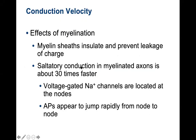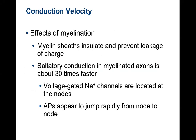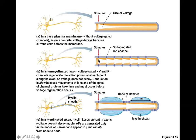Factors affecting transmission of the action potential include the diameter of the axon and the effect of myelination. Myelinated sheaths insulate and prevent leakage of charge. Saltatory conduction in myelinated axons is about 30 times faster — voltage-gated sodium channels are located at the nodes, and action potentials appear to jump rapidly from node to node. In an unmyelinated axon you have to depolarize at every point, whereas in a myelinated axon you depolarize at one node and it jumps to the next — that jumping mechanism is saltatory conduction.